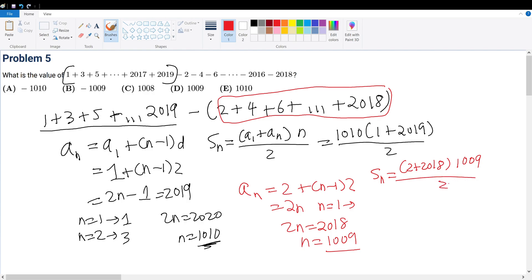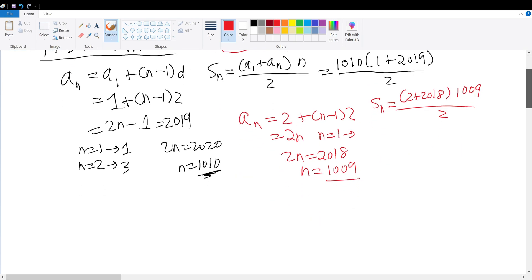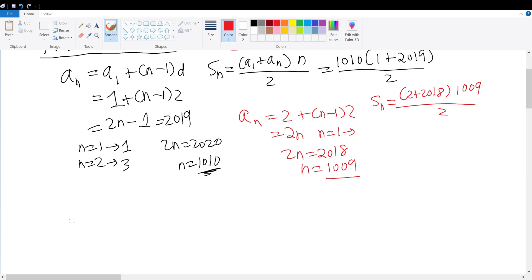Now we need to subtract the sum written in black with that written in red. So this is 1010 times 2020 minus 2020 times 1009 divided by 2.